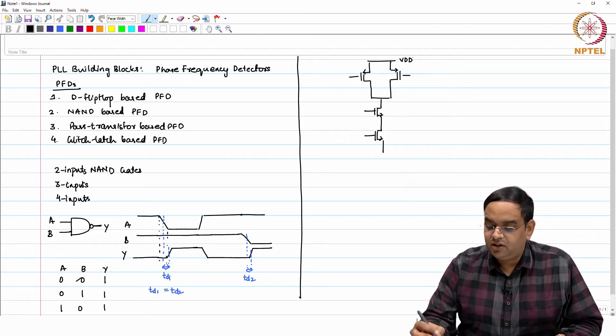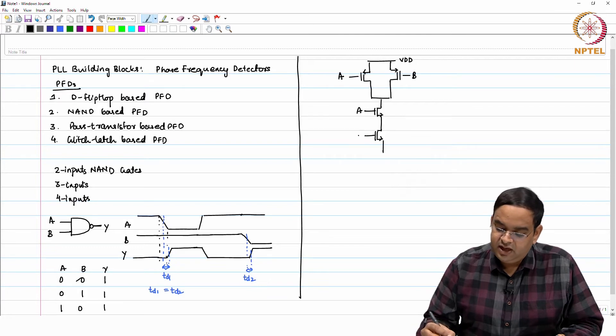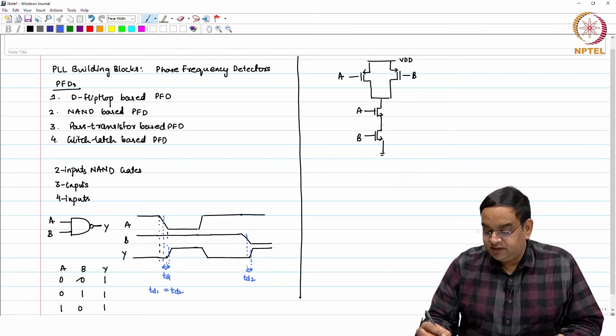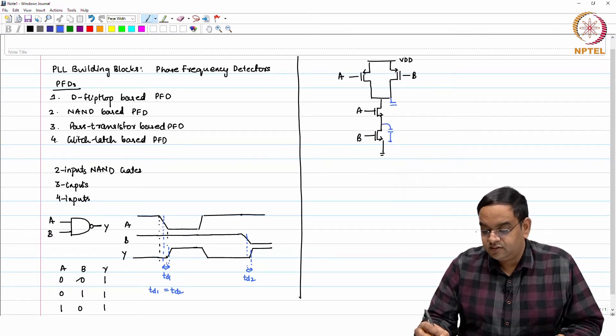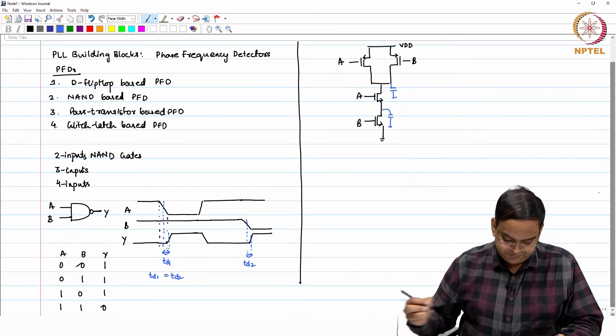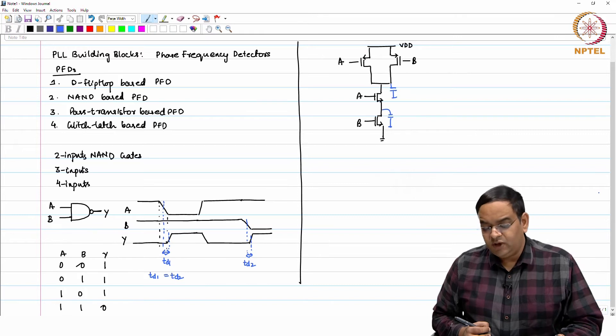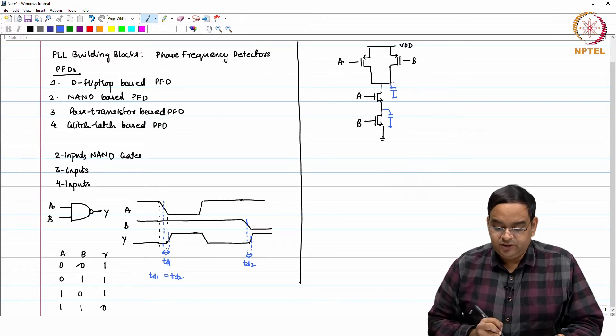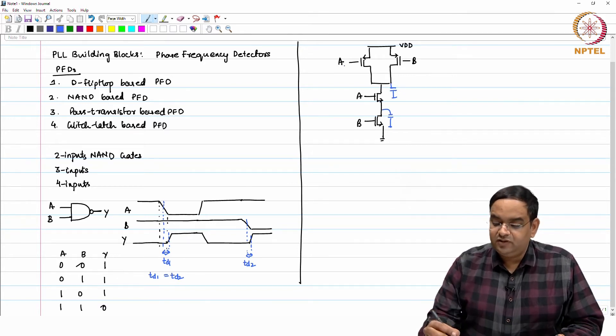You have A and B. Now here the parasitic capacitance at each node actually differs. Consider the case when A and B both were equal to 1. At that time this was discharged, or if you think the other way, when A is 0 and B is 1.